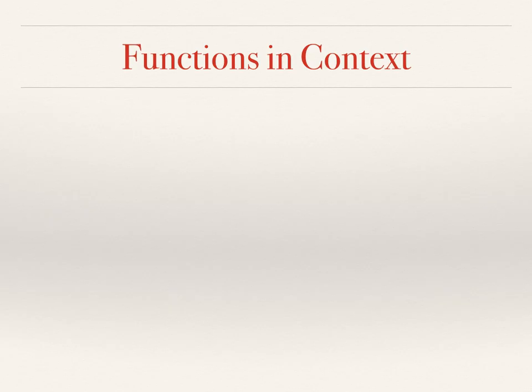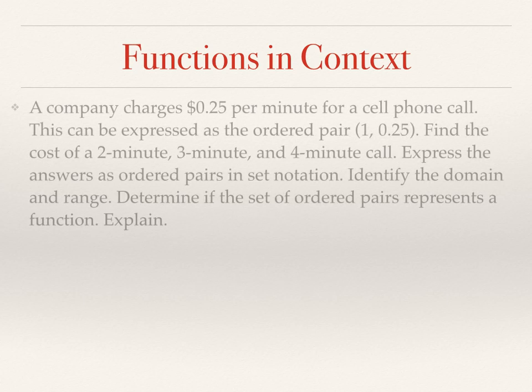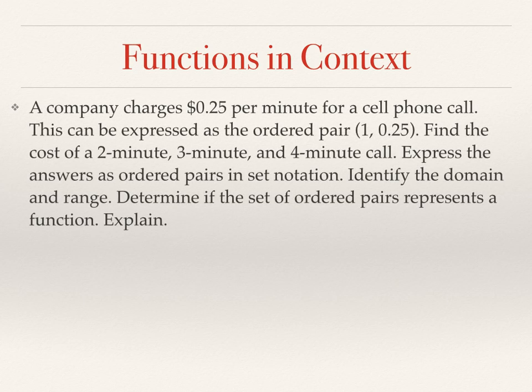Now finally, there will be an example of a function given in a context form or a story problem. So here's one. A company charges 25 cents per minute for a cell phone call. This can be expressed as the ordered pair 1, 0.25. In other words, for 1 minute it costs 25 cents.